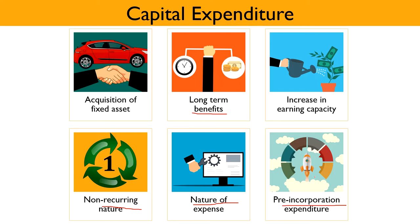Some common examples of capital expenditure are money spent on purchase of land and building, plant and machinery, furniture, vehicles, overhauling of second-hand machinery, and repairs or reconditioning of fixed assets which increase the profit-earning capacity.